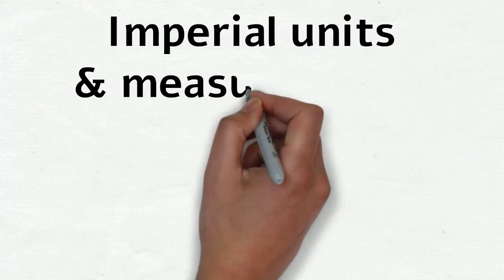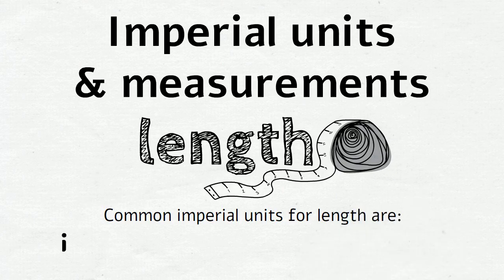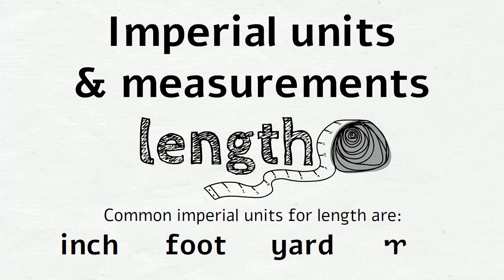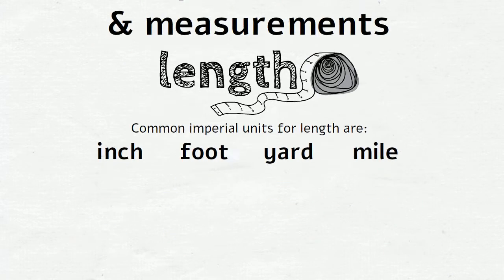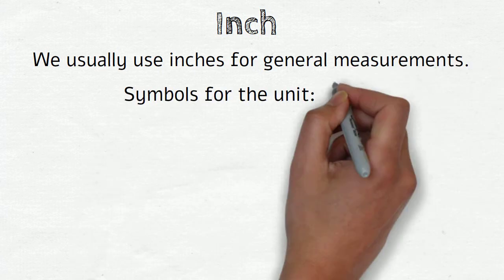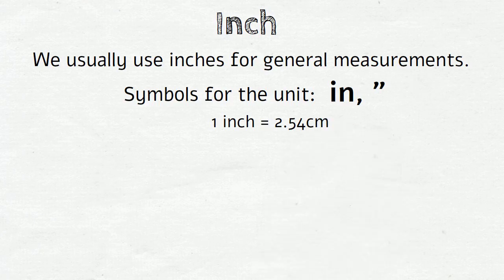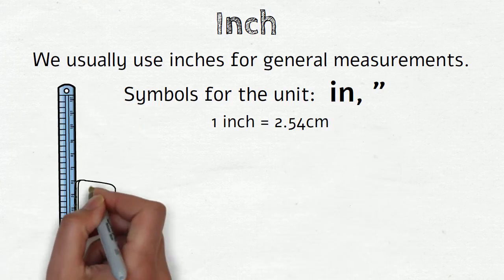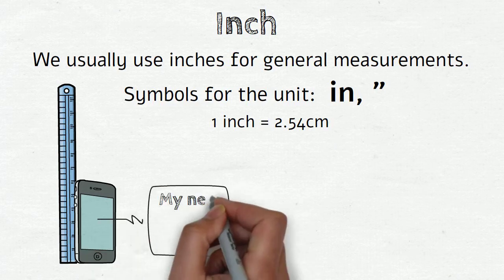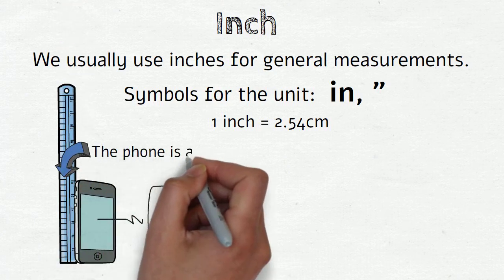Imperial units and measurements for length. The common imperial units for length are inches, feet, yards and miles. We'll start with inches. We usually use inches for general measurements. The symbols for the unit are in and quotation marks. 1 inch equals 2.54 centimeters. If someone says 'My new phone is about 6 inches,' this means that the phone is about 15 centimeters tall.